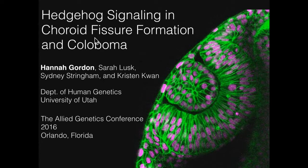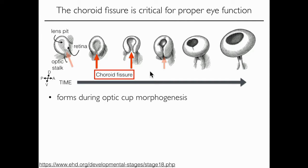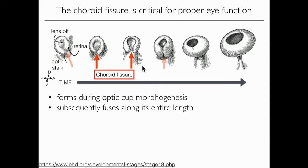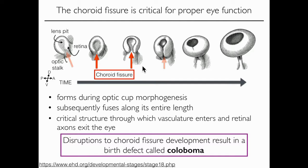Most of you are probably not familiar with the choroid fissure structure, so to introduce you, I'm showing a series of images depicting the various steps of both optic cup and choroid fissure development. The choroid fissure is a narrow opening on the ventral side of the optic cup that extends through the optic stalk. As development progresses, this fissure closes to form a critical tube through which vasculature can enter the eye and retinal axons can exit. Defects in choroid fissure development result in uveal coloboma, predicted to cause an estimated 10% of pediatric blindness worldwide.